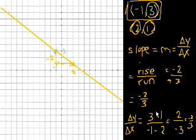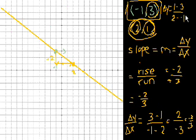Now we could have done it the other way. We could have made this the first point. Then the change in y would be 1 minus 3 over change in x, 2 minus minus 1. Well, 1 minus 3 is minus 2, and 2 minus negative 1 is 3. So once again, we got minus 2 thirds. So it doesn't matter which point we start with.